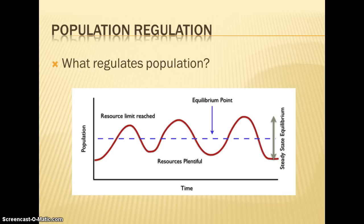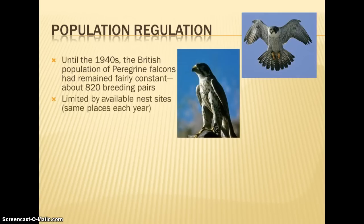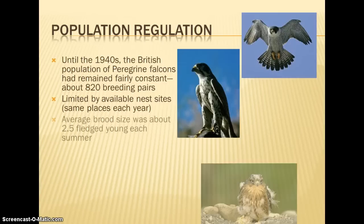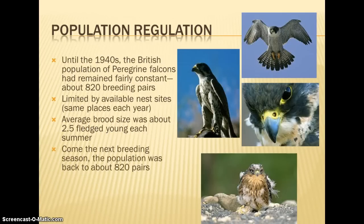When a stable ecosystem reaches equilibrium around carrying capacity, several things regulate the population. Peregrine falcons in Great Britain remained fairly constant until the 1940s at about 820 breeding pairs, limited by the number of available nest sites — no nest sites means no breeding. The average brood size is about two and a half young, which is greater than replacement-level fertility, so you'd expect growth. However, the next breeding season the population returned to about 820 pairs, because not all young survive year to year and not all breeding pairs can find nesting sites — so the population reaches equilibrium.